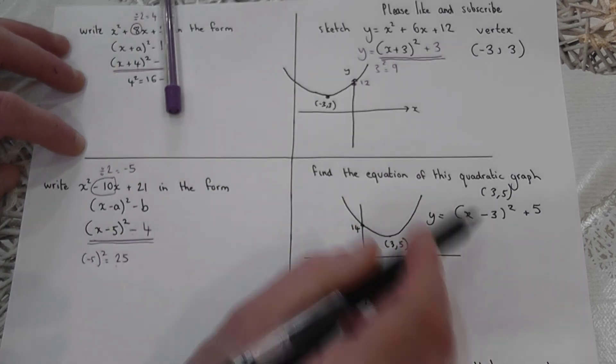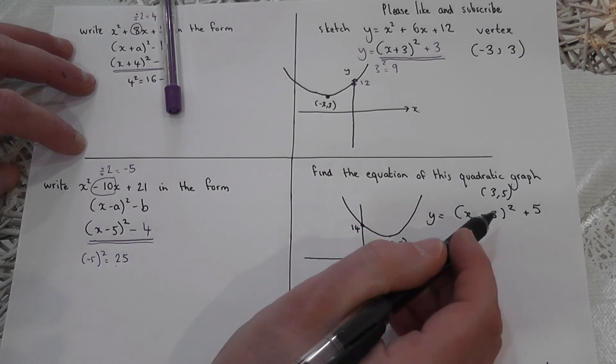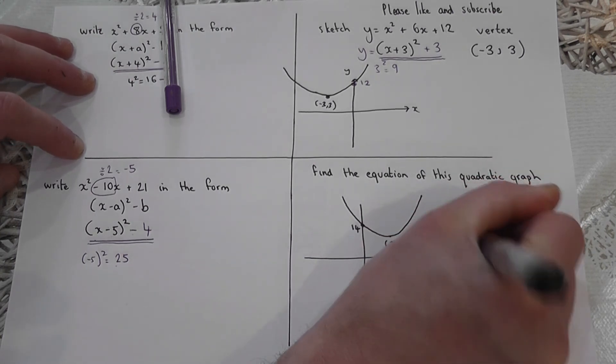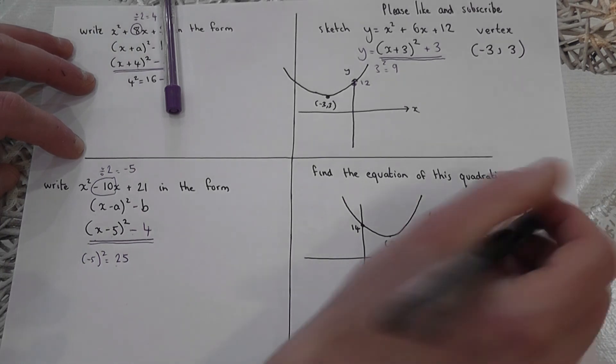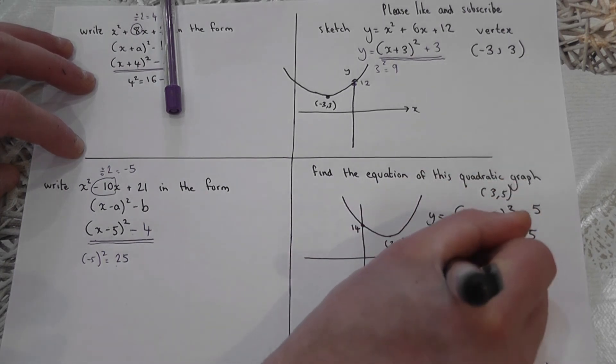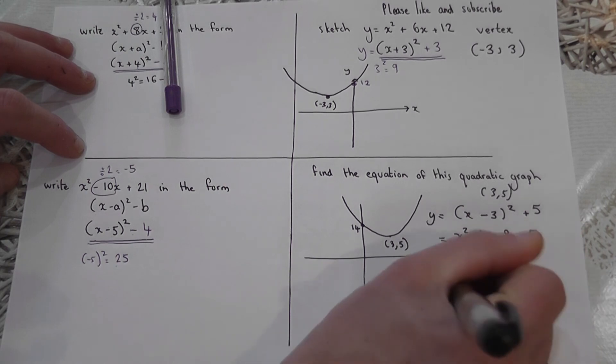I can then expand that out. To expand this, and if you look at expansion, then please look at the video on expanding. I get the following: x squared minus six x plus nine. And there's a plus five there. So that could be simplified to get x squared minus six x plus 14.